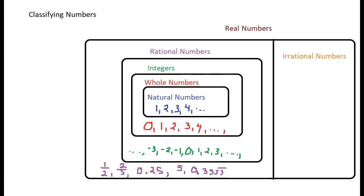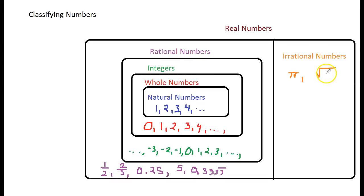What about numbers that cannot be written as a fraction? They are called irrational numbers. Irrational numbers are special numbers — for example, pi. Pi is an irrational number because it is a non-repeating, non-terminating decimal. It goes on forever and does not repeat. Three point one four is just a rounded value; people have crashed computers trying to calculate pi to hundreds and thousands of decimal places.